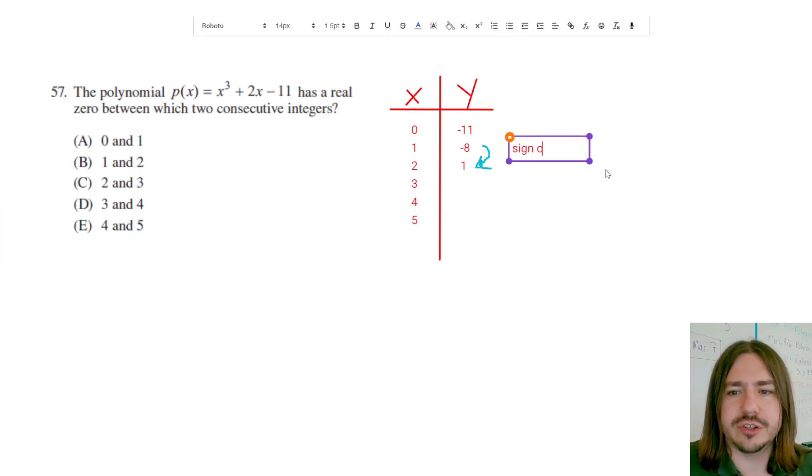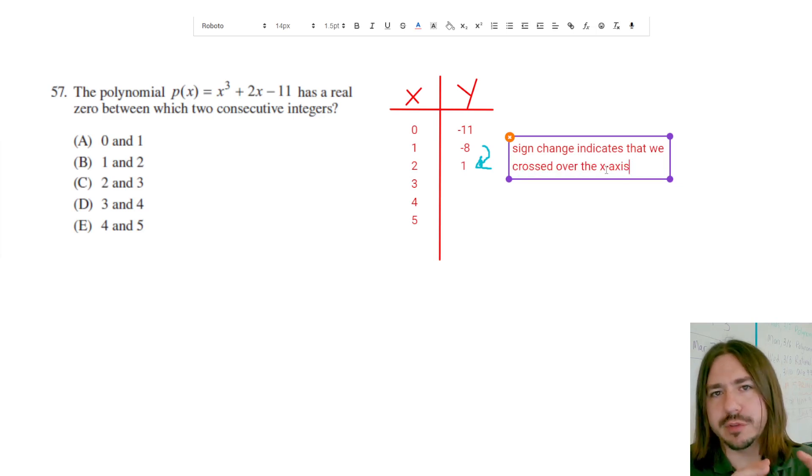The sign change indicates that we crossed over the x-axis. If we go from a negative value, which is below the x-axis, to a positive value, which is above the x-axis, that means we crossed over the x-axis. And if we're going to cross over the x-axis, we have an x-intercept, and therefore we have a zero.